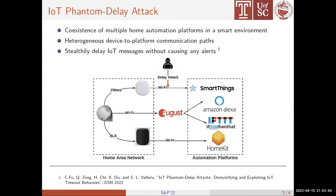It is becoming a trend for IoT devices to interact with multiple home automation platforms where different passes exist. The IoT phantom delay attack is a new attack that can seriously delay many IoT devices' messages from dozens of seconds to hours. It does not depend on any IoT implementation vulnerabilities and triggers no connection alerts.